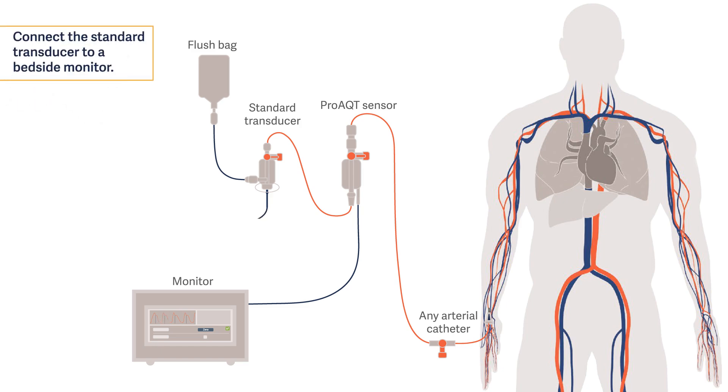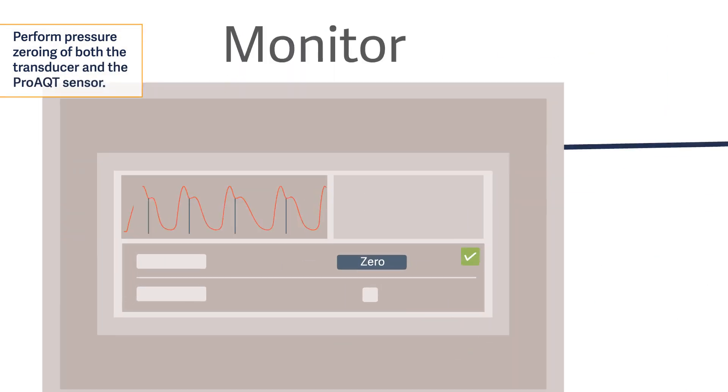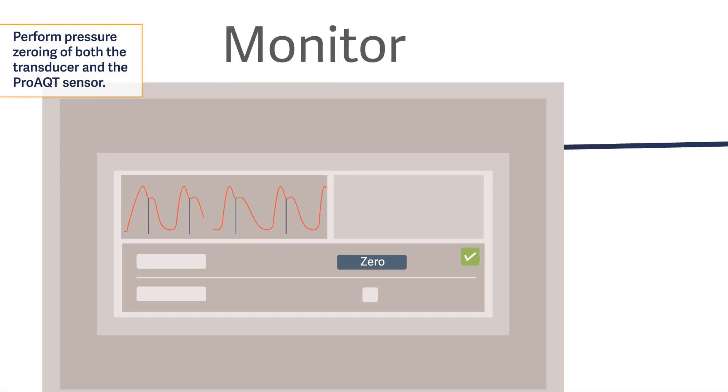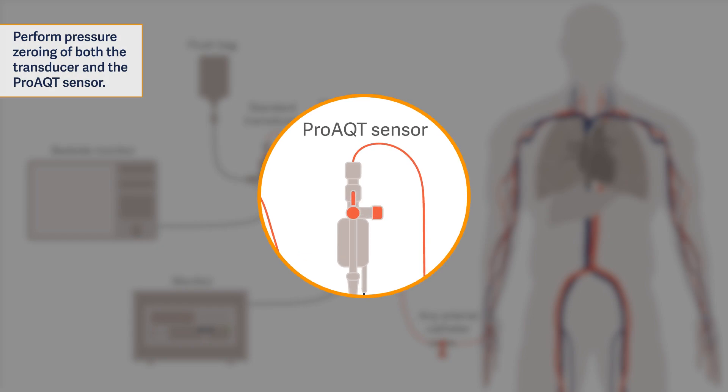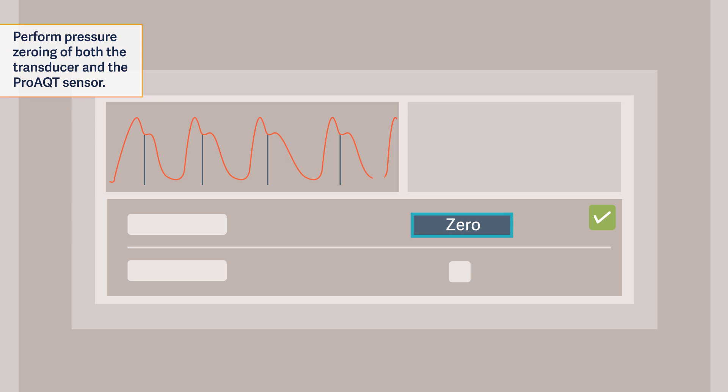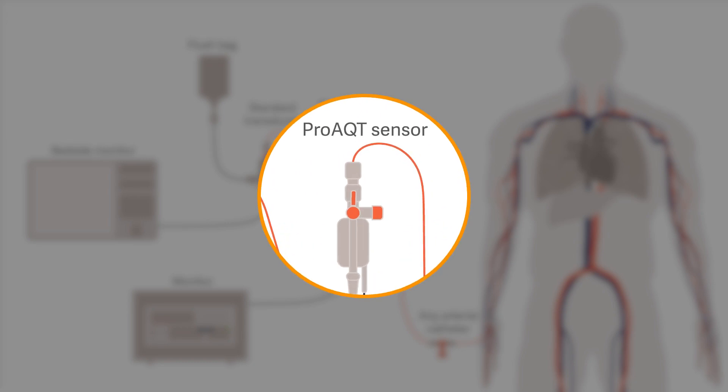Connect the standard transducer to a bedside monitor. To zero the pressure signal, tap the pressure curve area on the monitor. Open the arterial system to atmosphere for zeroing. Tap the zero button on the monitor. Close the arterial system for the measurement.